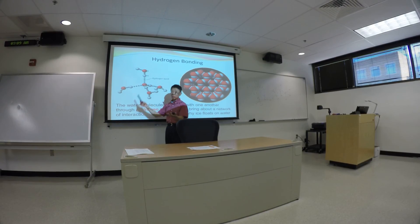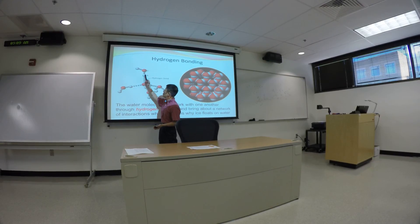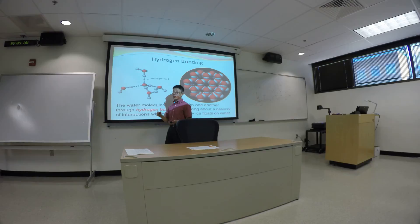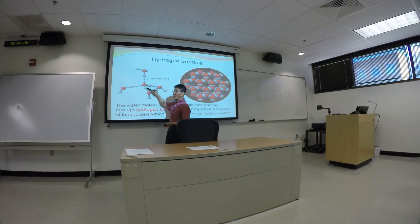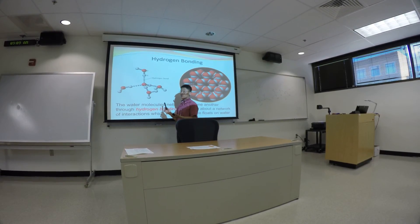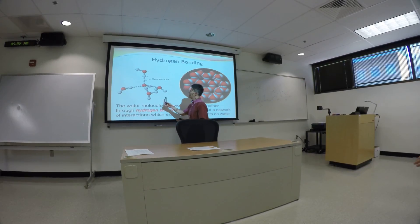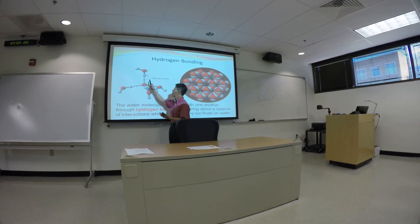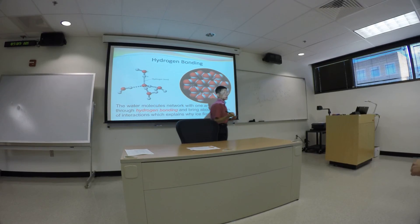Those lone pair of electrons carry negative charge and can be attracted to the positive end of other water molecules. Similarly, the positive ends of a water molecule can be attracted to the negative end of other water molecules. If you look at this entire structure, you end up with a tetrahedral arrangement of four water molecules connecting to one water molecule in the center.